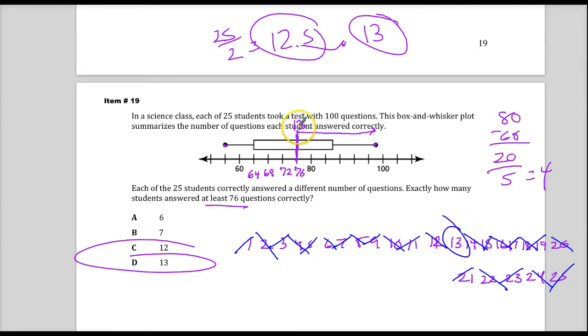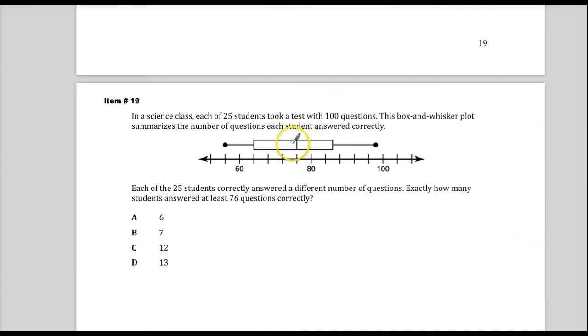So what that represents here on this line, anytime you have a box and whisker plot, is this would be the median value. And since there's 25, we figured that the median was 13. It means the 13th kid falls right there. And it also means the other 12, 14, 15, 16, 17, all the way up to 25 fall above that amount. So I can say that there are 13 students that fall into that group.